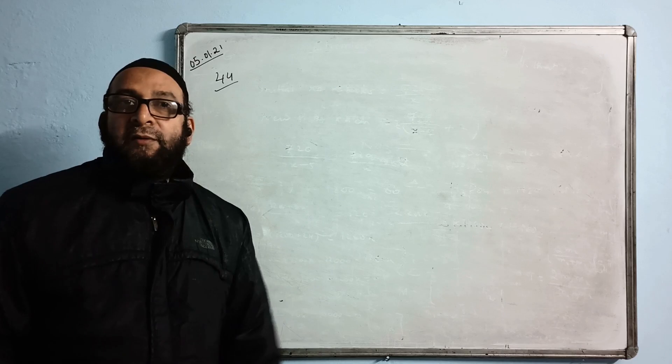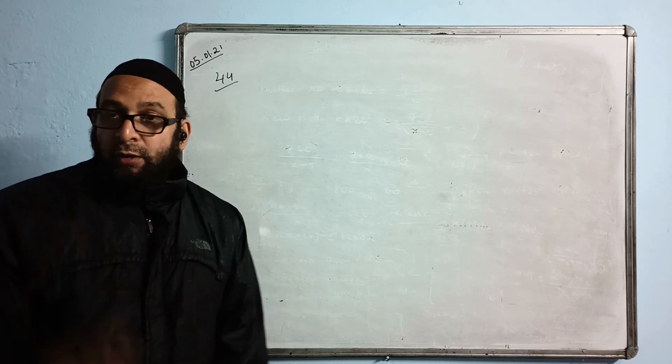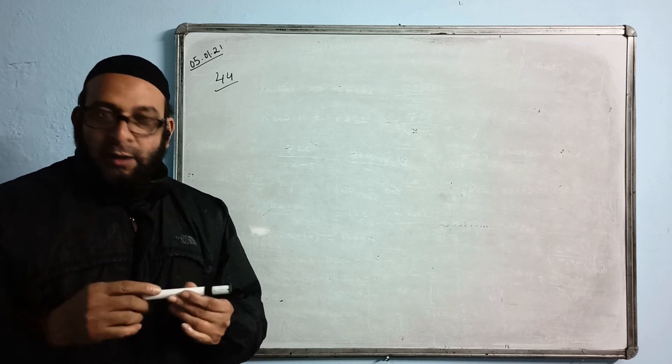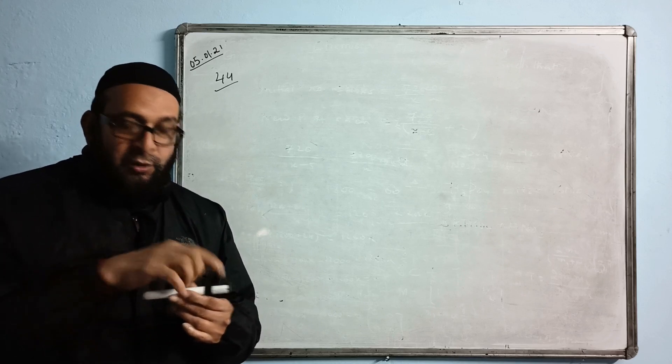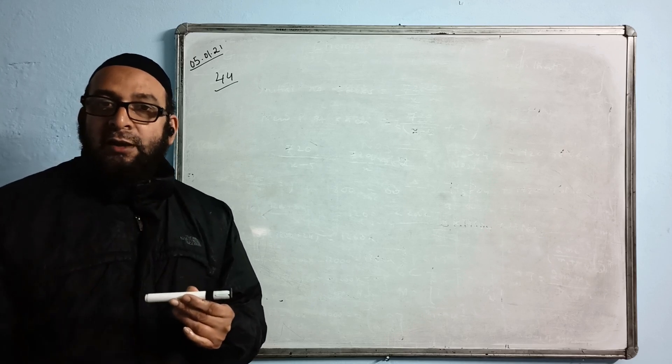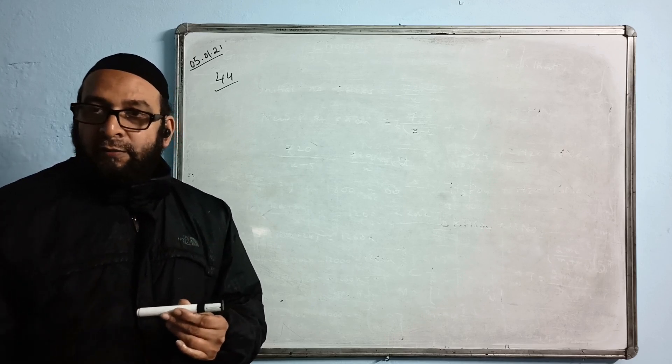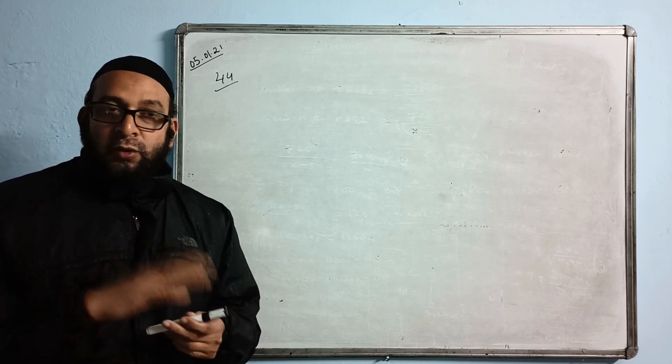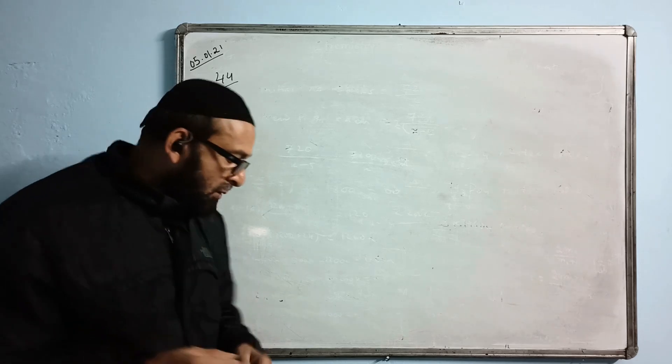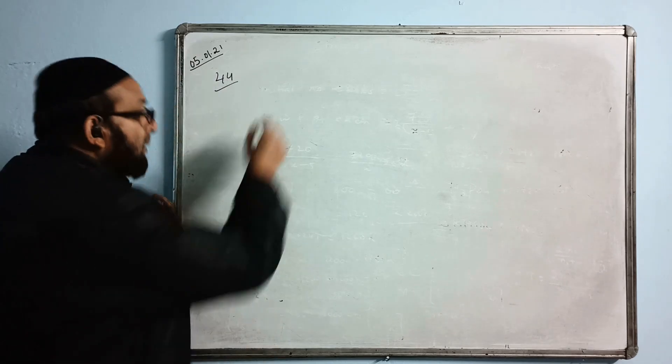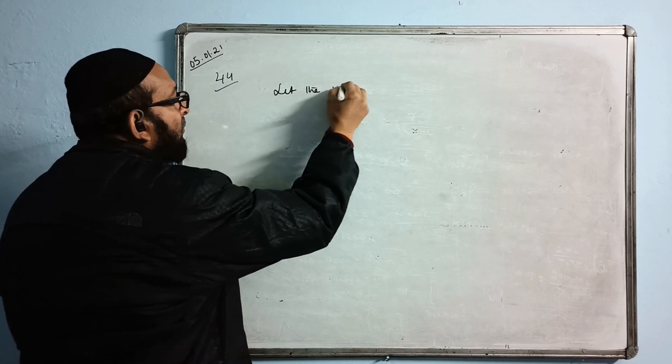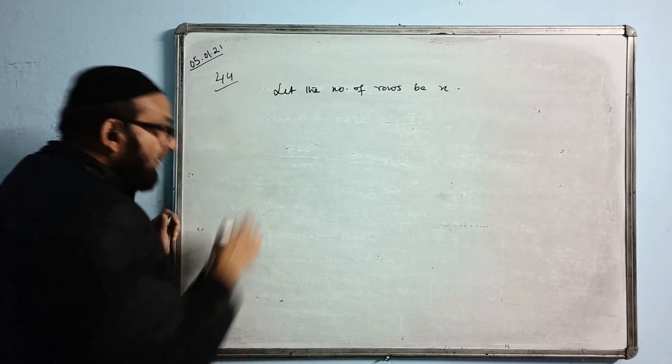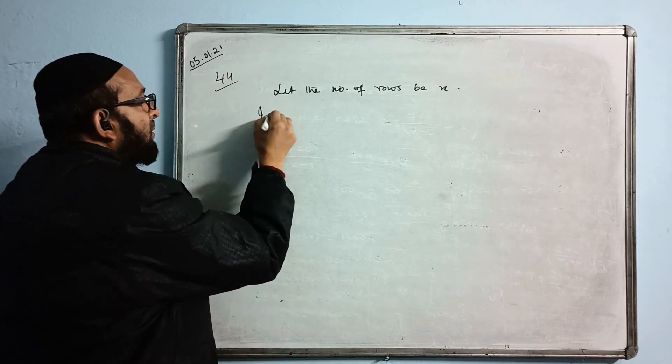Number of rows and number of columns, when you multiply you get the total number. One example: suppose there are 4 rows and each row has 3 students, how many students are there? 3 into 4 equals 12. So to find the total number of seats, we have to multiply the rows with columns. Let the number of rows be X.